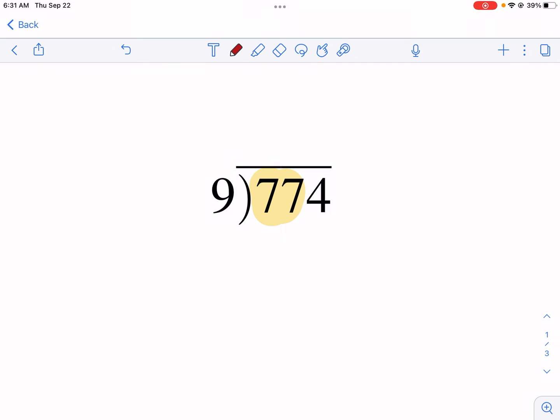So how many times does 9 go into 77? I know 9 times 8 is 72. It's not exactly 77. So I need to subtract and find the difference. 77 minus 72 is 5. I always going to drop down the next digit. That's going to be 4. 9 times 6 is 54.